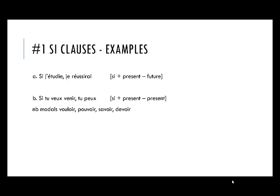'Si tu veux venir, tu peux' — there's an example of the si clause in the present tense and the verb in the main clause in the present tense as well. This usually applies to modal verbs: vouloir, pouvoir, savoir, devoir — these are the kinds of verbs you will see in this sort of construction. Finally, 'Si elle arrive, ouvre la porte' — if she arrives, open the door — an example of the si clause in the present tense and the main clause using the imperative.